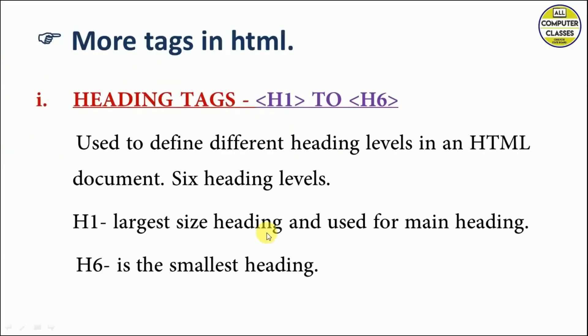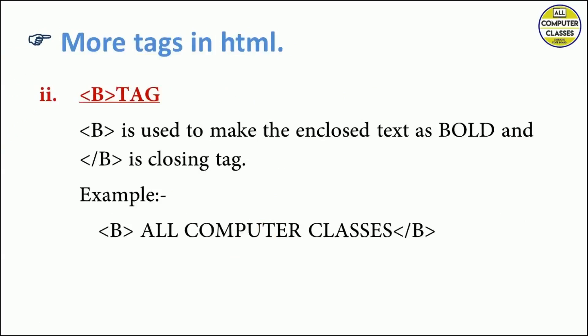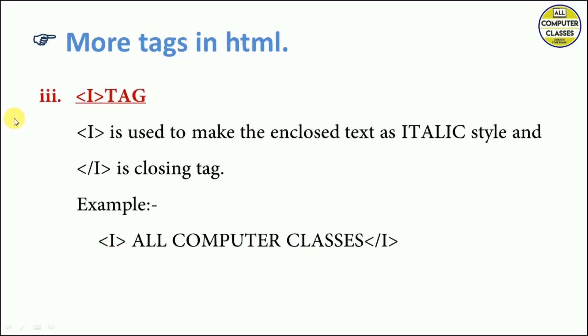Next is bold tag. The bold tag is used to make the enclosed text bold. It is again a container tag because it uses both an opening and a closing tag. If I write some text within these two tags it will be bold. Then we have the i tag, which stands for italic, used to make the enclosed text italic. It is again a container tag with both a starting and closing tag.